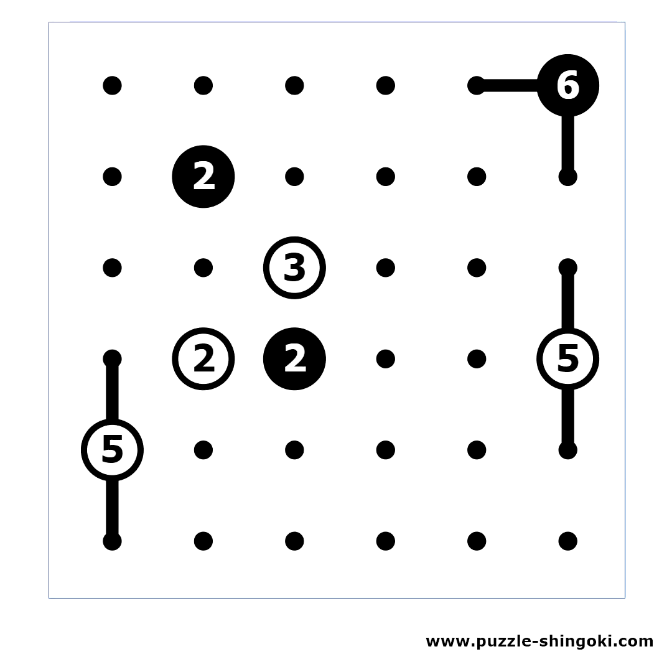Now we need to make use of the numbers in the circles. The lines which come out of this 5 have a total length of 2. Their lengths need to add up to 5.